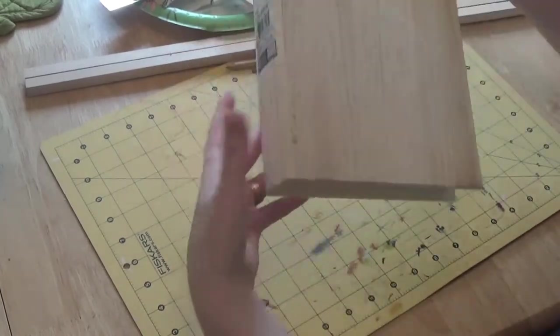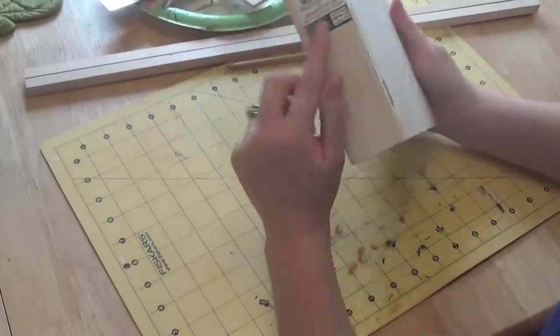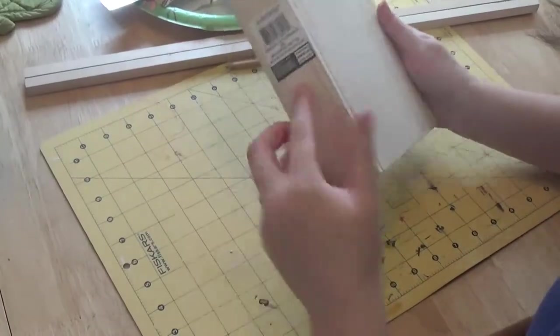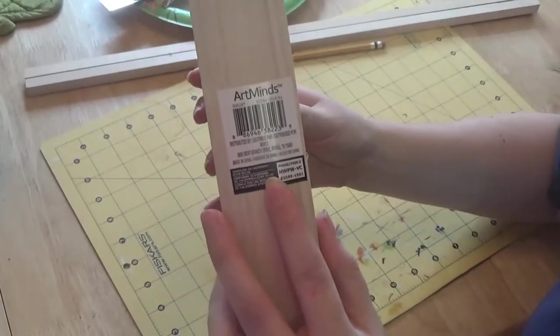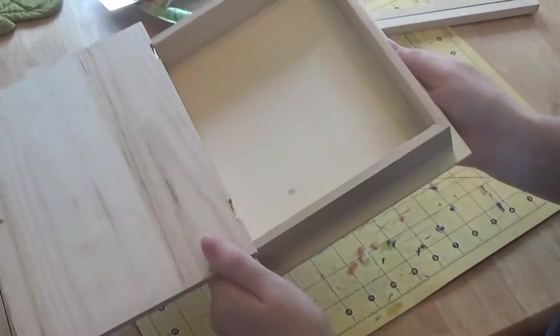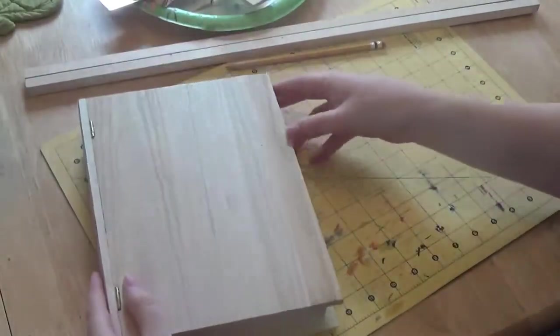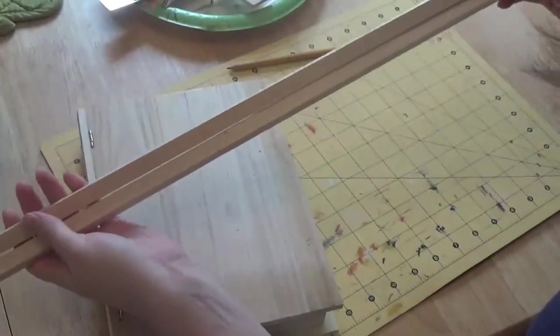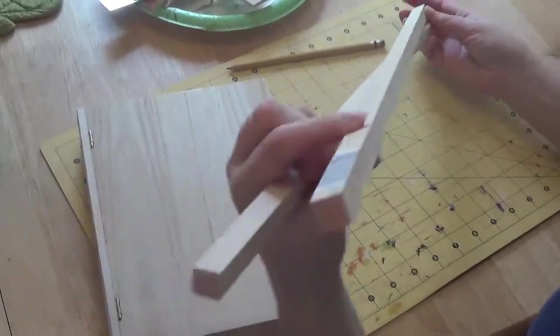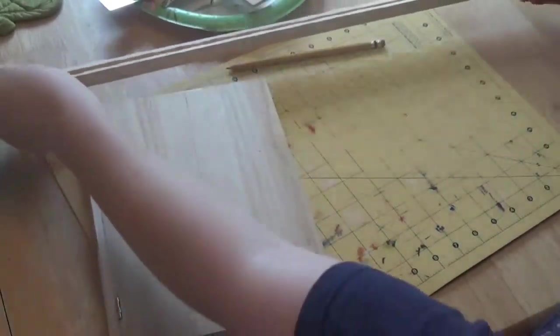For today we'll need a wooden book. I got mine at Michael's. They're $4.99. And I have two wooden dowels. They're 1.5 inch square and 24 inches long. You'll need two of those.